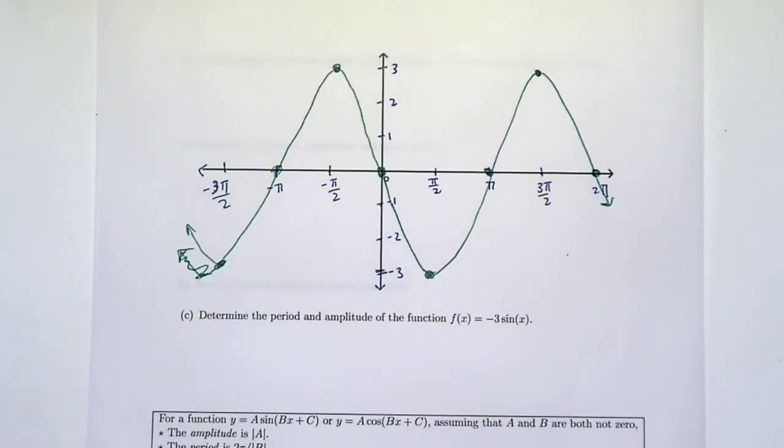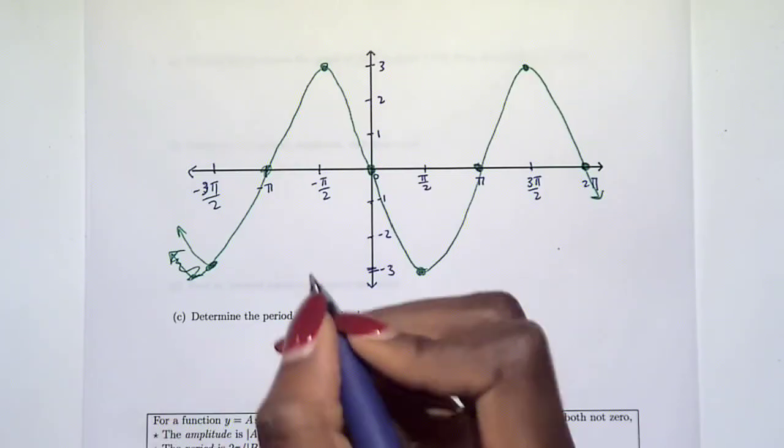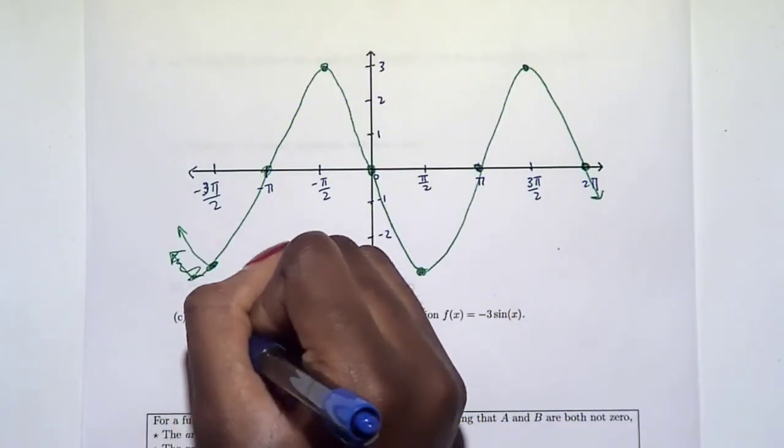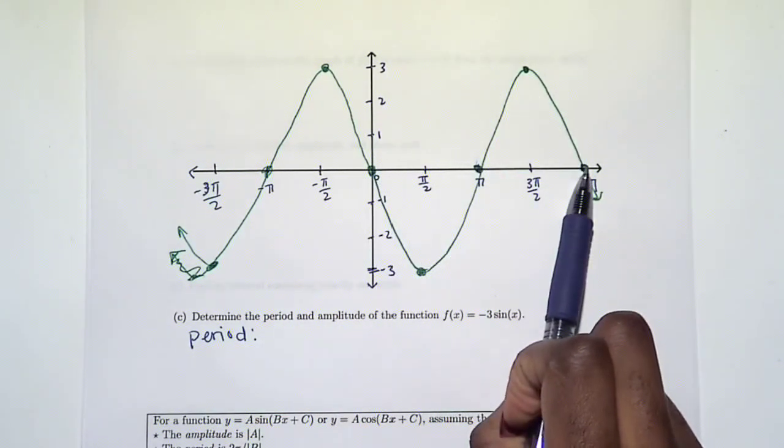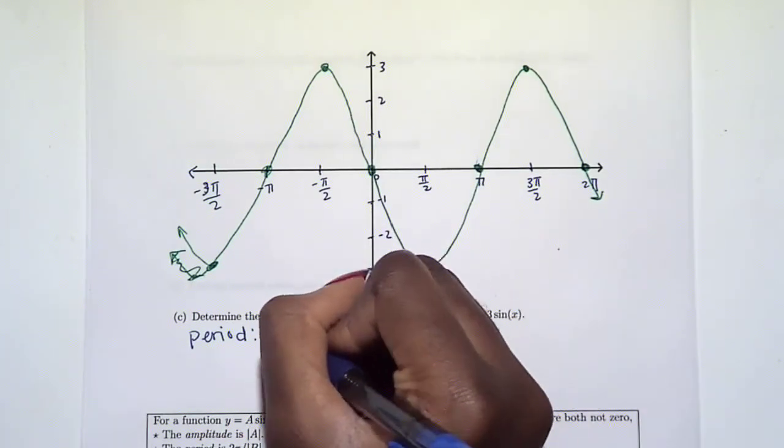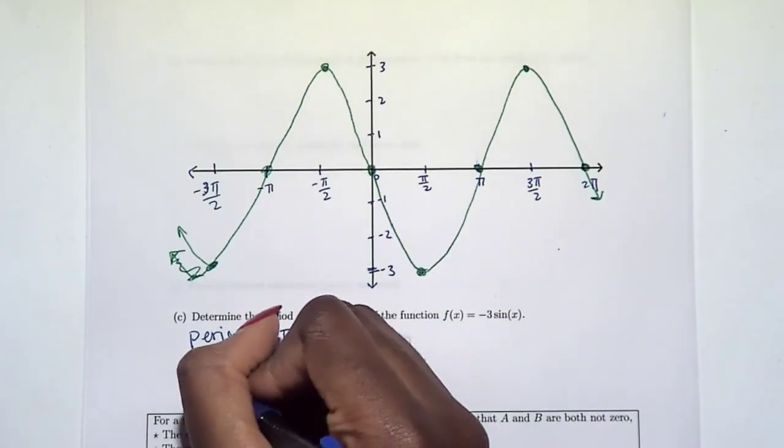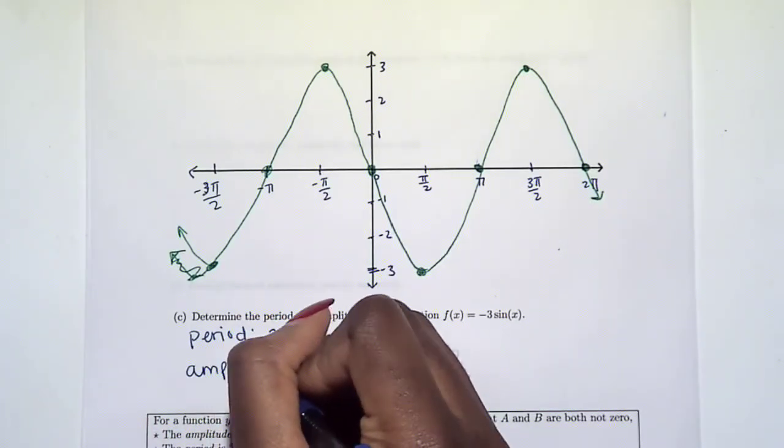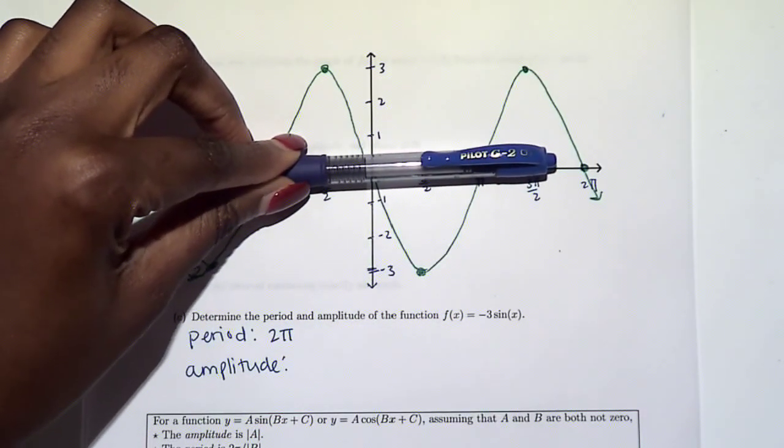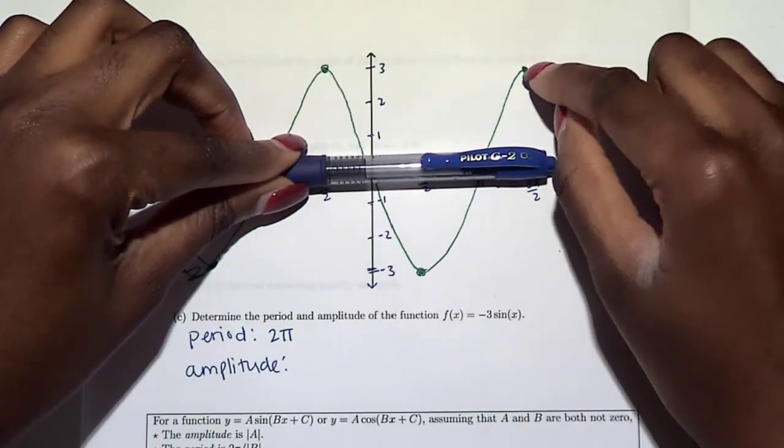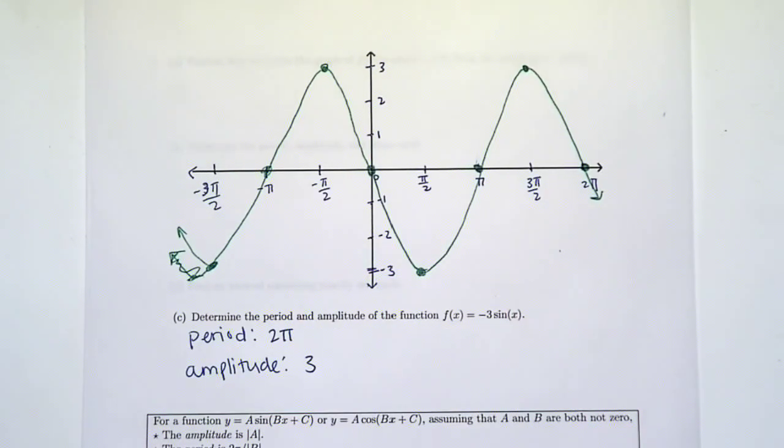Part c, determine the period and amplitude of our function. The period is how long it takes to repeat again. So what's one full cycle? 2π. Because after 2π it's going to do the exact same thing again. And then finally the amplitude. If you look at the middle of the graph, how far is the distance between the middle and the bottom and the middle and the top, that is 3 units.